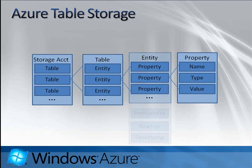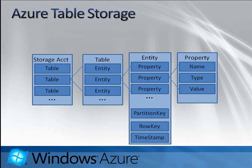When I say three or more properties, that wasn't a mistake. When you create an entity for Azure Table Storage we require you to provide three specific properties: a partition key, a row key, and a timestamp. The partition key is by far the most important — that's how we are able to offer massive scalability. If you're familiar with the concept of database sharding, you'll be very familiar with how Azure Table Storage works.